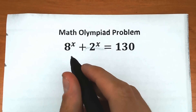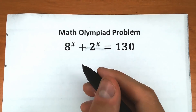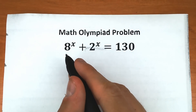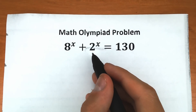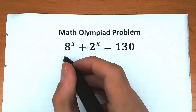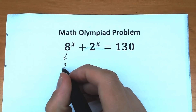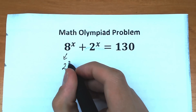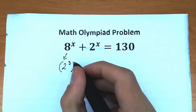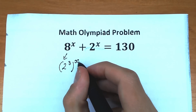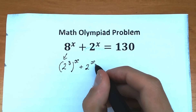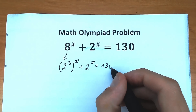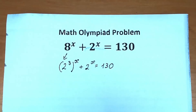First of all, let's rewrite this 8 as 2 cubed. We can do this because it's really great to work with the same base. Right here we have base of 8 and base of 2 — it's not ideal. So let's write this 8 as 2 cubed. So we have 2 to the third power raised to the power x, plus 2 to the x equal to 130. This is our first step.